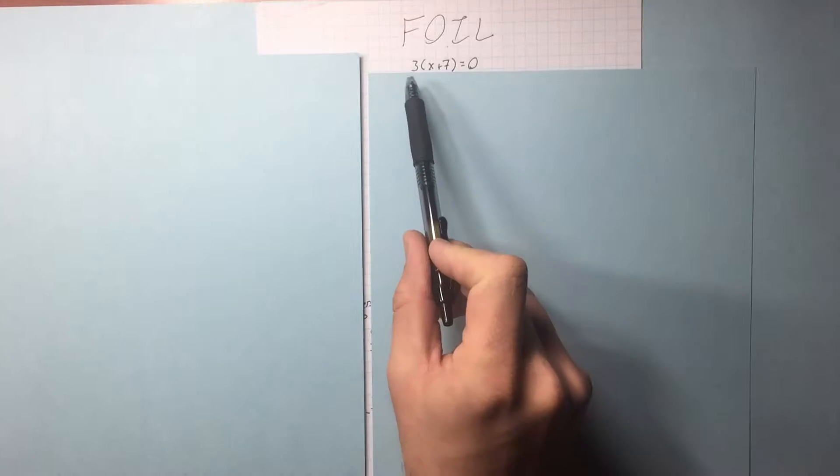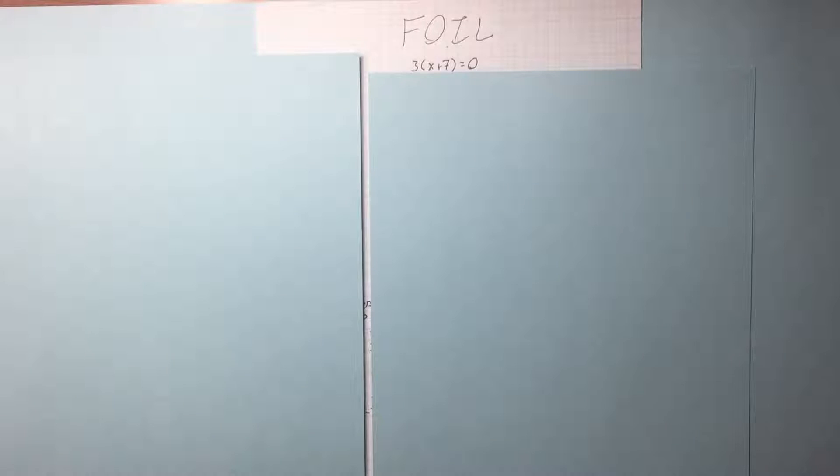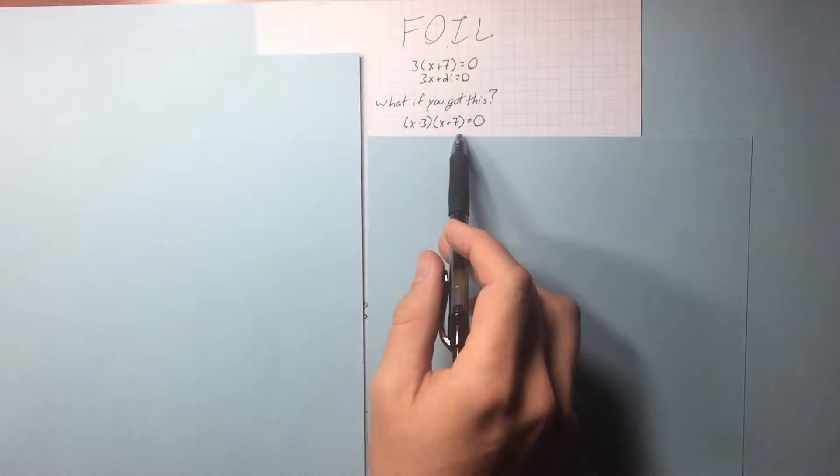Imagine you have a question like this. You would distribute the multiplication of three and you would get something like this, right? What if you get something like this? Two parentheses times each other.